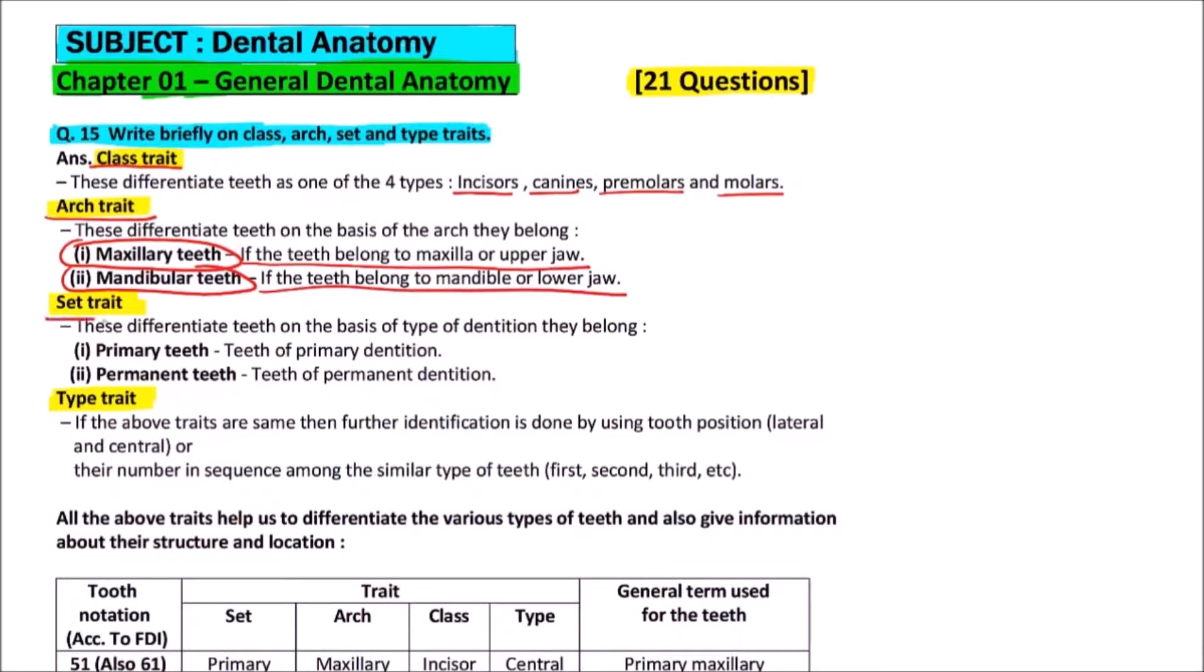Then third is set trait. This differentiates teeth on the basis of the type of dentition they belong. We know that humans are diphyodont and have two dentitions: the first one is primary and another is permanent dentition.